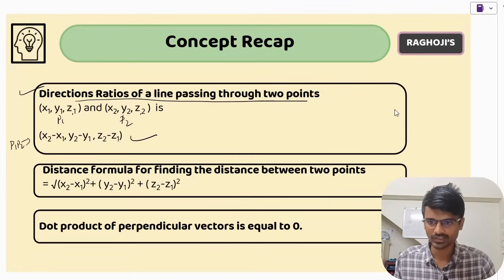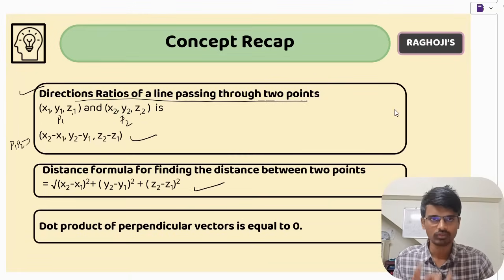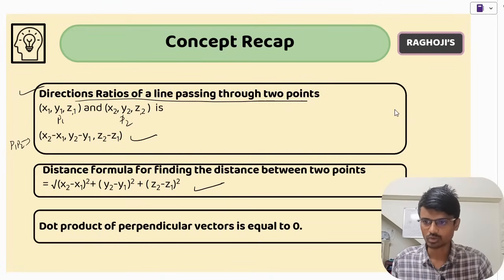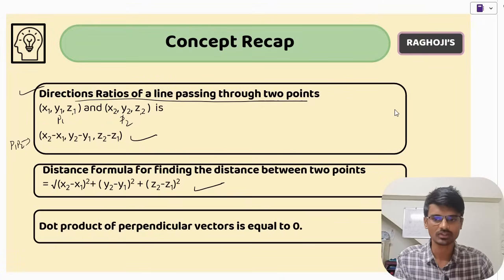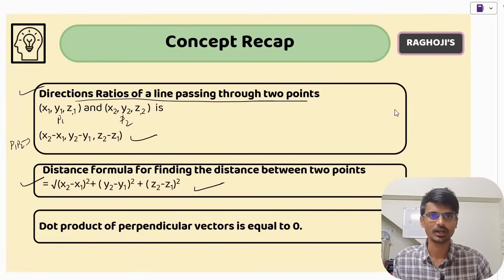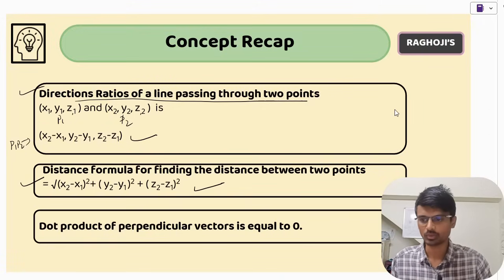Next, the distance formula. When you know two points, the distance between them in 3D is √[(x2−x1)² + (y2−y1)² + (z2−z1)²]. This is a pretty simple formula — I think everyone knows this.